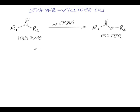So let's have a look at the mechanism. I'm going to use an example here, because I think it's useful to illustrate what's called the migratory aptitude of the alkyl groups. So if I take a benzoyl group, I'll just write it as Ph, CH2, ketone, and I'll call that CH3.